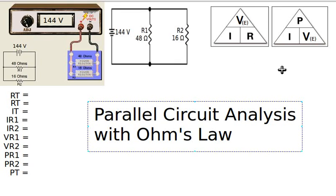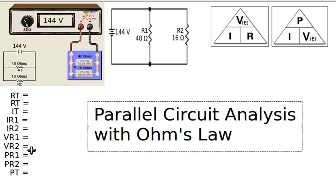Parallel circuit analysis with Ohm's law. Here we have a parallel circuit and we would like to find all of the values for resistance in the circuit — the resistance of the total circuit as well as all the individual components, which are already given to us. We'd like to find the current through every part, the voltage across every part, and the power dissipated by every part and the entire circuit together.